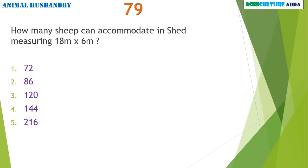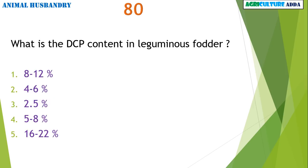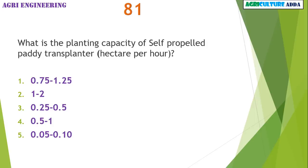How many sheep can be accommodated in a shed measuring 18 x 6 meters? 120 sheep. What is the DCP content in leguminous fodder — digestible crude protein? 18 to 12 percent.